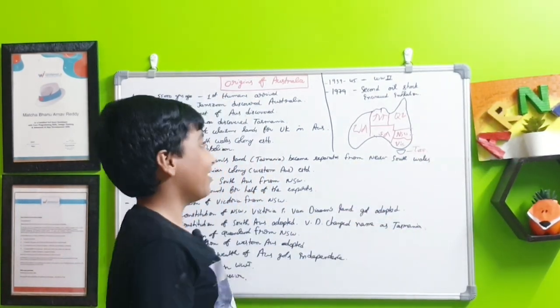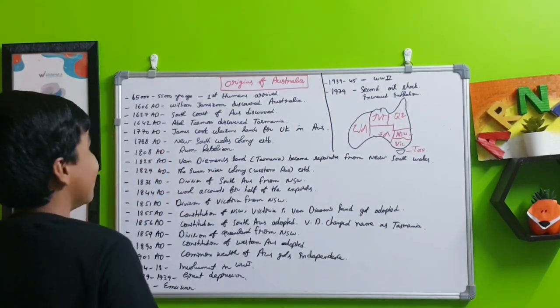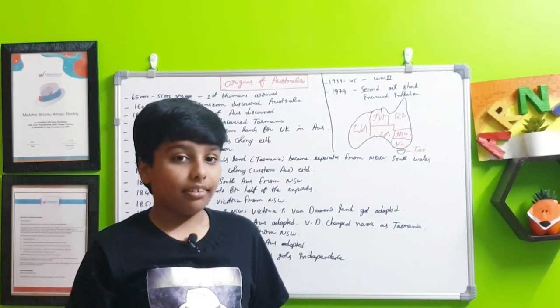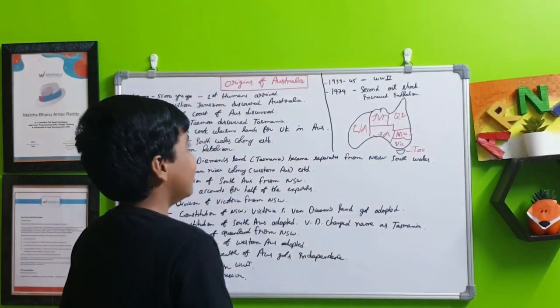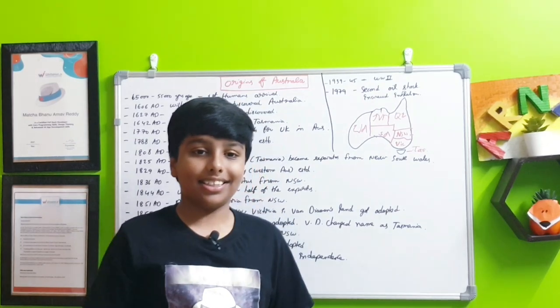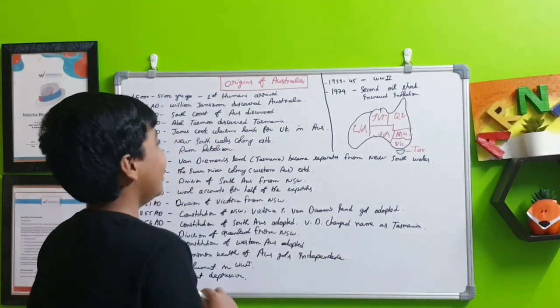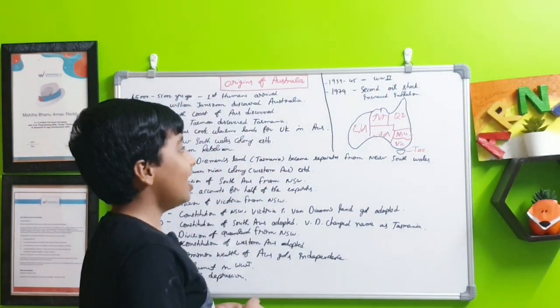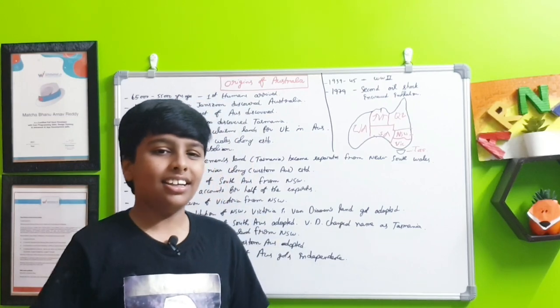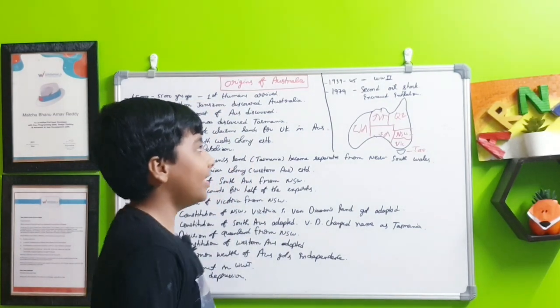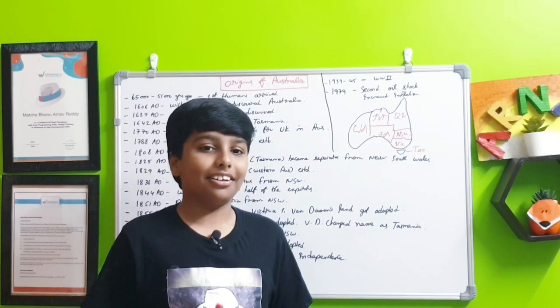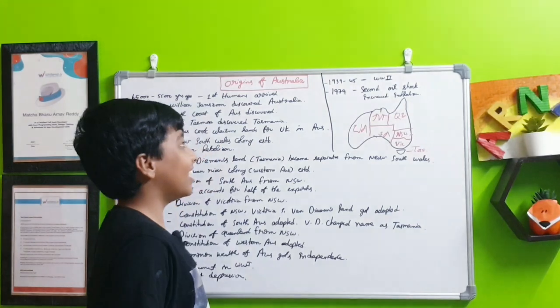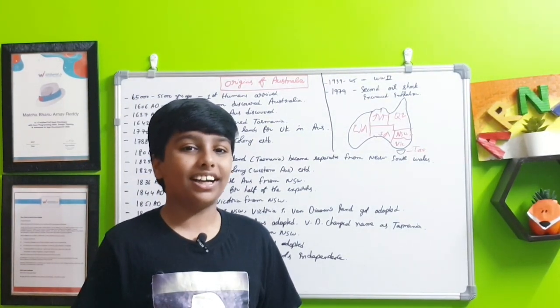In 1939 to 1945 Australia was again involved in World War 2. This time it was the Allies, in World War 1 also it was on the Allied side. In 1979 the second oil shock, which is like an oil crisis, increased the inflation in the country. In 1973 the first oil shock happened, but it didn't affect the country that much. But now in 1979 it affected the inflation of the country a lot.